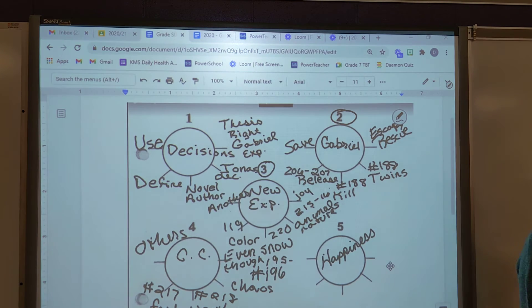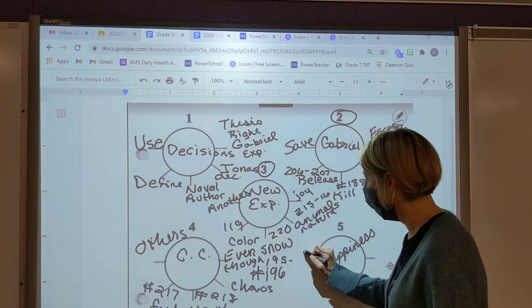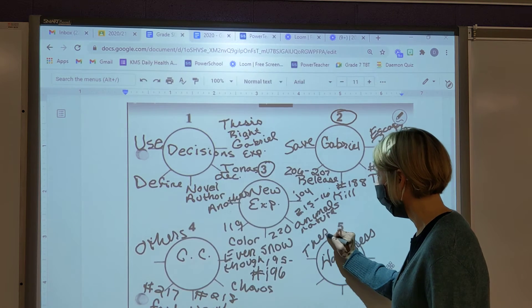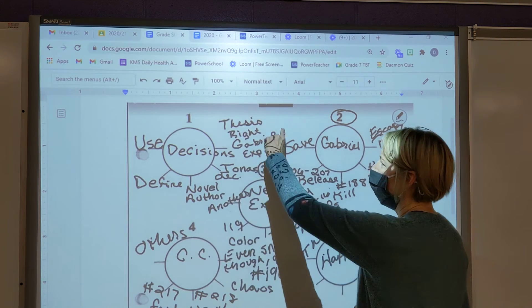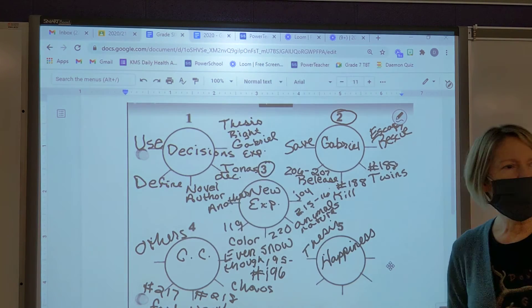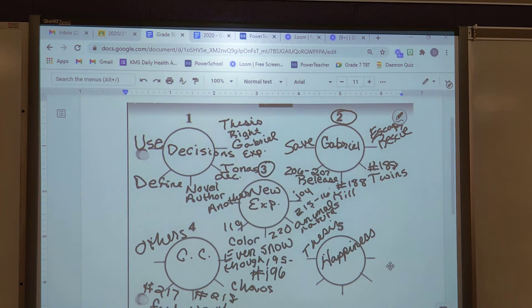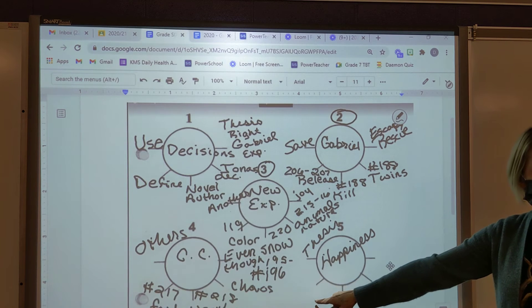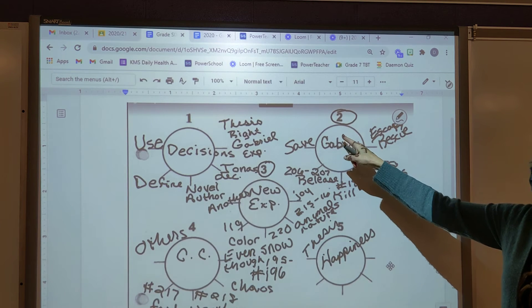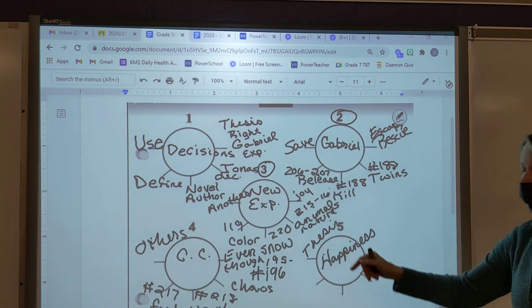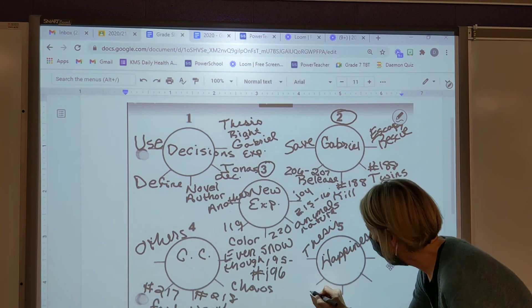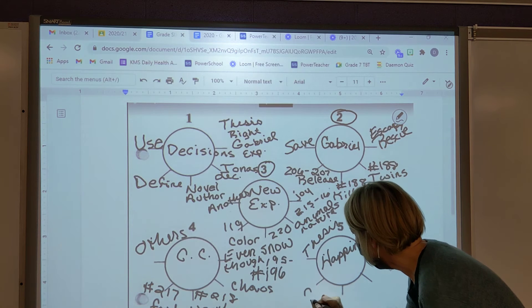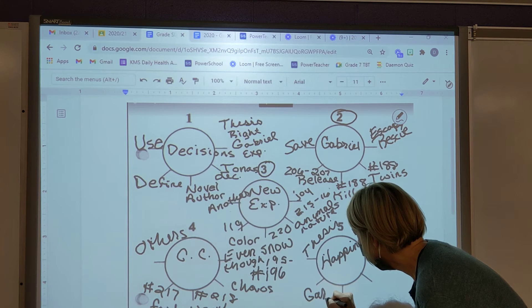Okay so the first spoke of our last wheel is always a restatement of the thesis and I'll go over this when we write. But this is where we take this and we restate it in a different way. Okay. The second spoke is always going to be a summary of the second wheel so this is going to be a summary about Gabe, right?